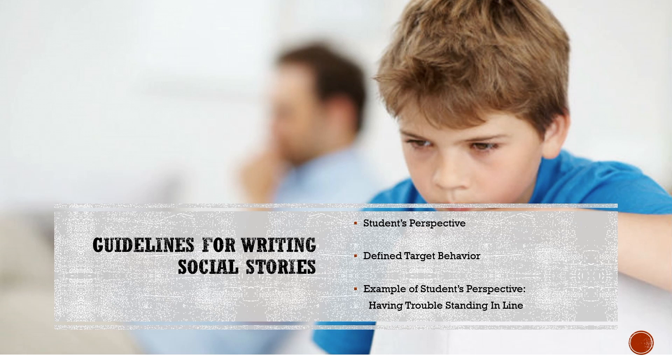In order to write a beneficial social story for a student, it is critical to view their individual perspective. The student's perspective will actually determine what you write and what the social story focuses on. As the author of the social story, we start to conceptualize the story based on the desired target behavior we either want the student to improve or to replace with another more appropriate behavior.